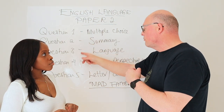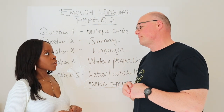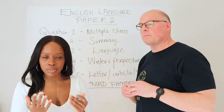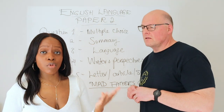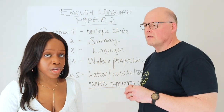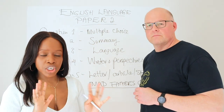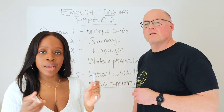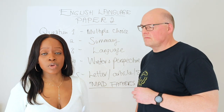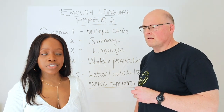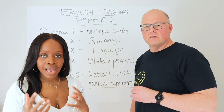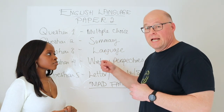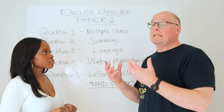That leads us to question 3. You only need to look at one extract, which comes as a relief — usually the modern source, though some past papers have asked about language in the Victorian source. Question 3 tests your awareness of language: things like alliteration, metaphors, similes, and so on. Since it's worth 12 marks, my suggestion is to write three PEEL paragraphs, each containing a language observation.